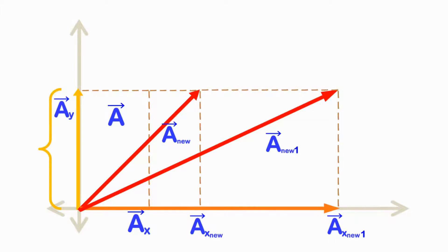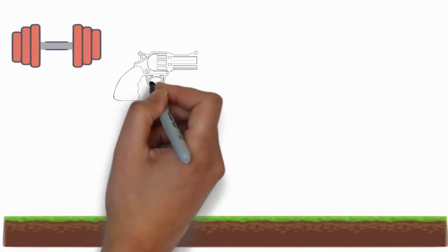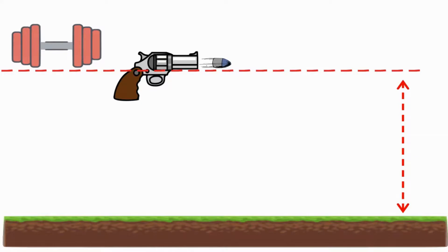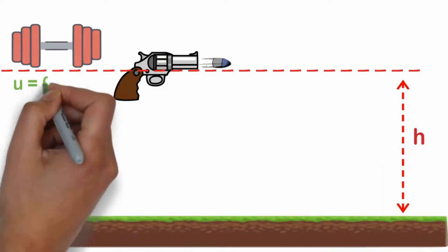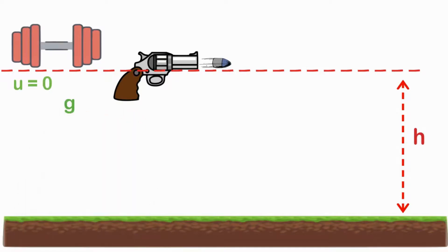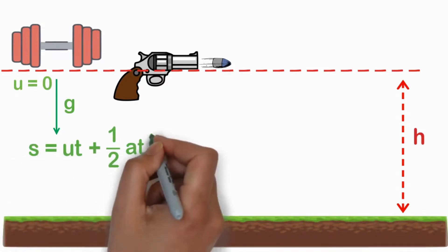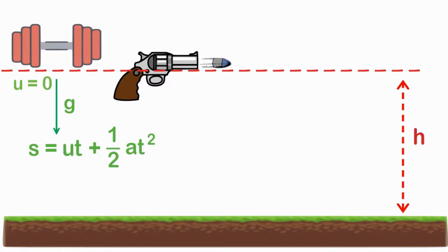Let us consider the situation again. Initially, the bullet and dumbbell are at the same height from the ground. As the dumbbell is at rest, its initial velocity is zero, and acceleration due to gravity is in the downward direction. Hence, using the kinematical equation s = ut + ½at², we can calculate the time taken to reach the ground, that is t = √(2h/g).